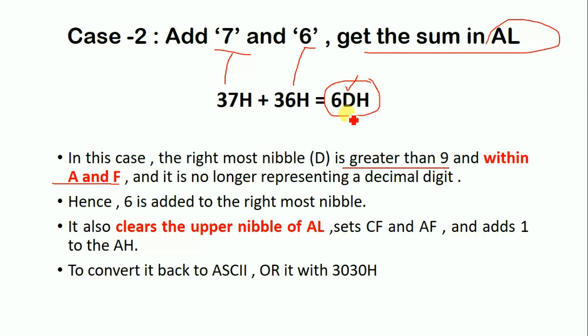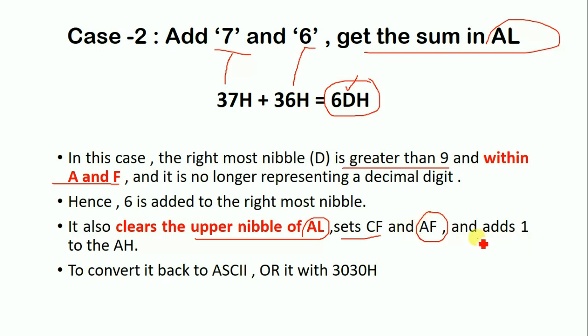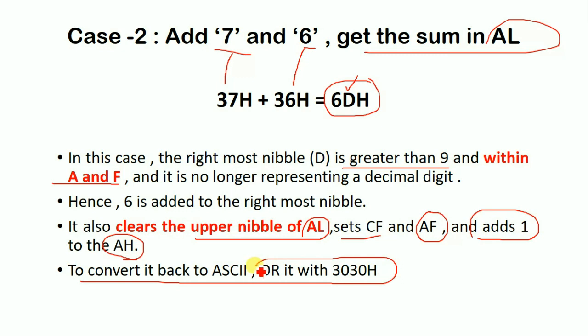Since the lower nibble is in the range A to F, the AAA instruction applies corrections: first, add 6 to the lower nibble of AL; second, clear the upper nibble of AL; third, set the carry flag. When this addition is done, the carry is automatically transferred from the lower nibble to the upper nibble, so the auxiliary carry flag is also set. Then add 1 to register AH, and finally perform an OR operation with 3030H to get the ASCII value.